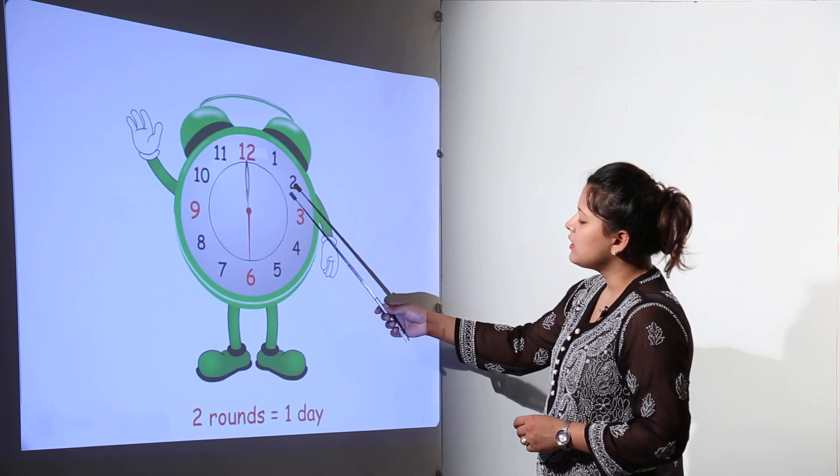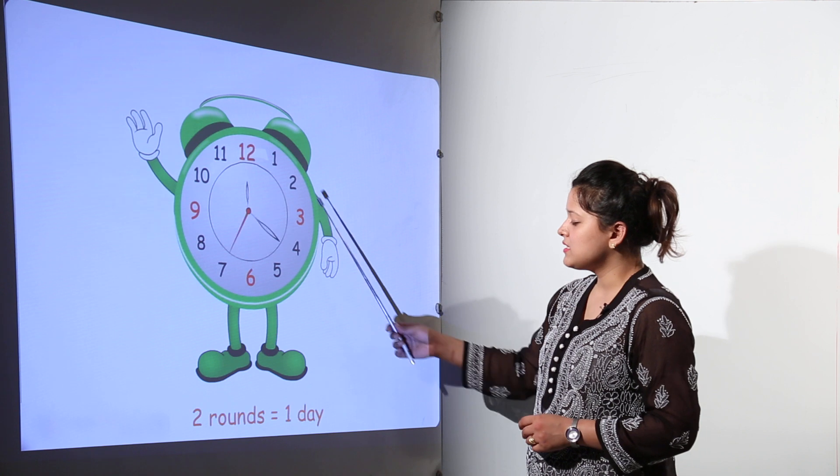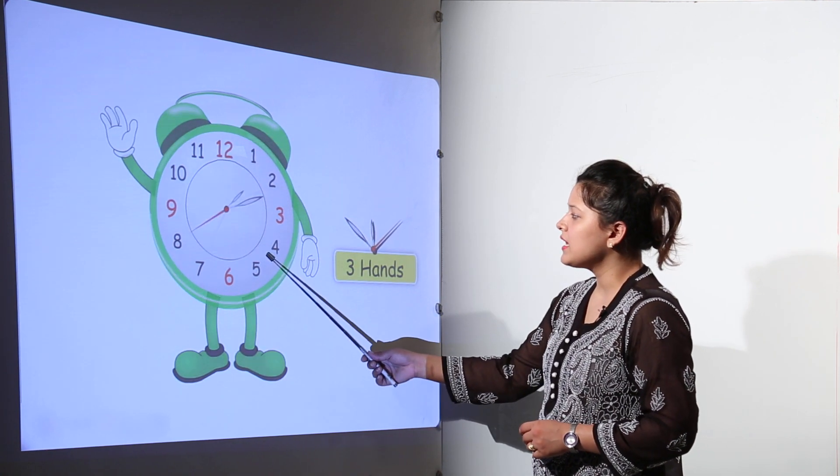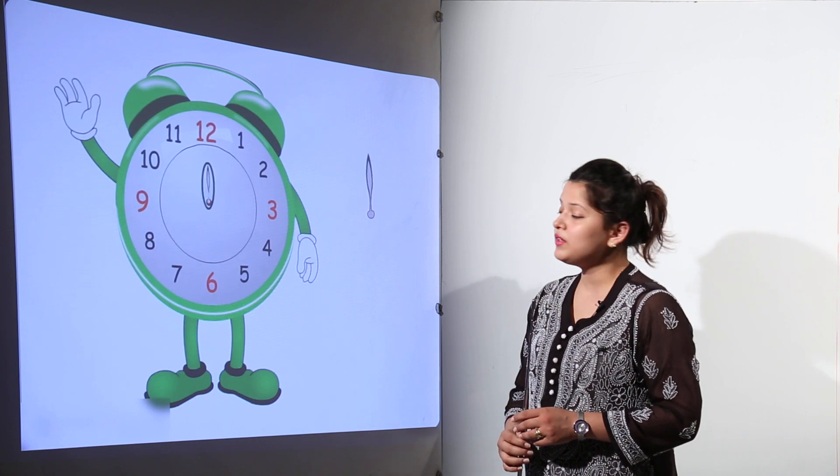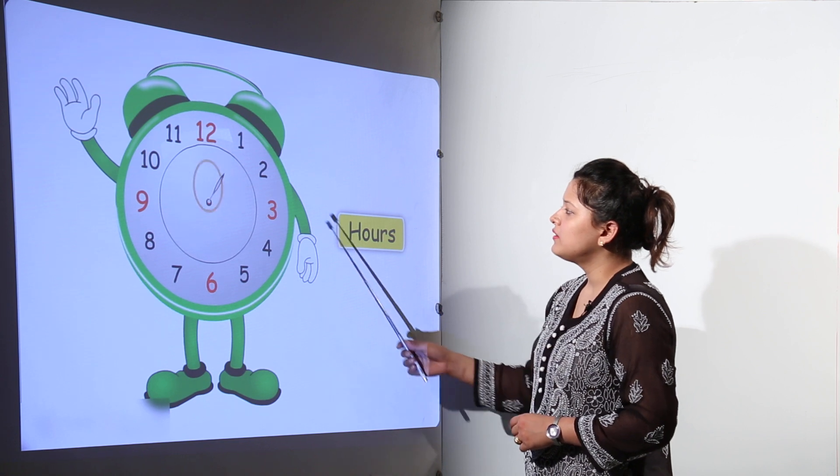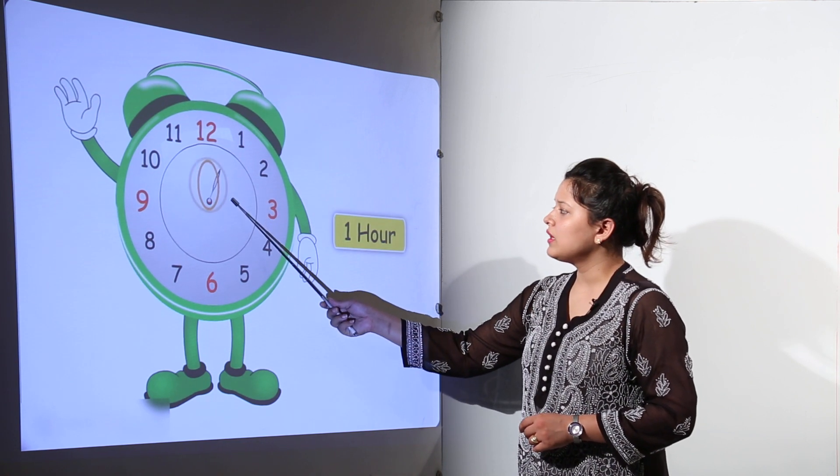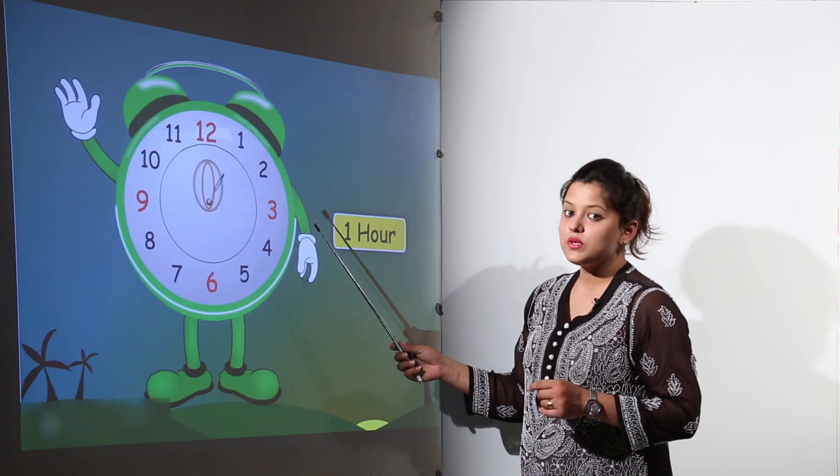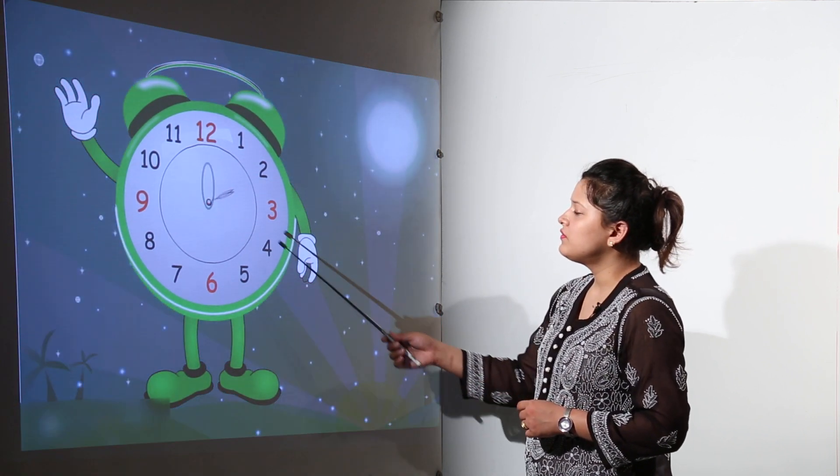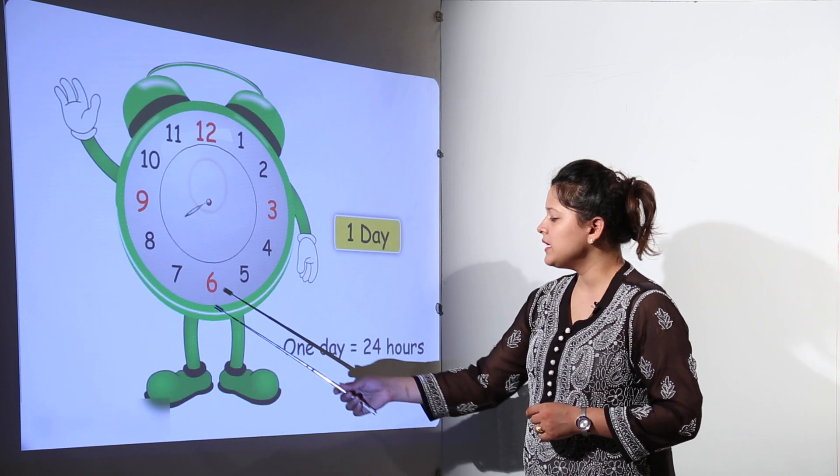There are two rounds that a clock takes in one day. There are three hands that we can see on every clock. The smallest one is the hour hand. The hour hand moves in one hour. Its one movement will tell us the one hour.